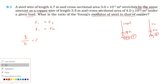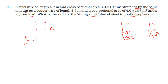Writing the given values: length of the steel wire L_s = 4.7 m, length of the copper wire L_c = 3.5 m, area of cross-section of steel wire A_s = 3×10⁻⁵ m², area of cross-section of copper wire A_c = 4×10⁻⁵ m².